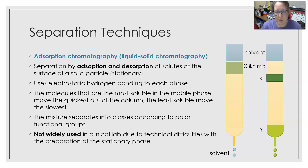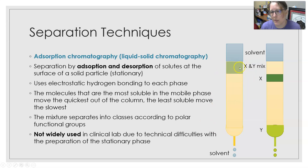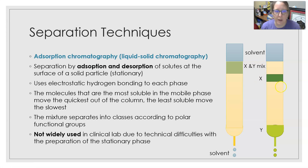Molecules most soluble in the mobile phase move quickest out of the column; the least soluble move slowest, and the mixture separates into classes according to polar functional groups. In the example, Y favors the solvent and flows through faster, while X adsorbs onto the stationary phase and can be flushed off to desorb it. Adsorption chromatography is not widely used in the clinical lab due to technical difficulties with stationary phase preparation.